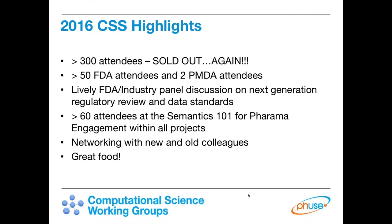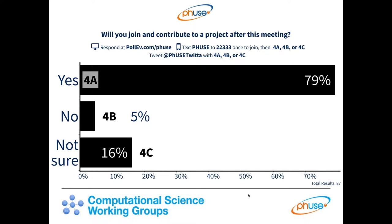There was a lively panel discussion between FDA, industry, and PMDA on the next-generation regulatory review environment and next-generation data standards. We ran a Semantics 101 Workshop for Pharma on Sunday evening — originally slated for 30 attendees, 60 people showed up, and it was very well received. We'll be running that again at the European CSS. Networking and good food were also highlighted in the post-event survey.